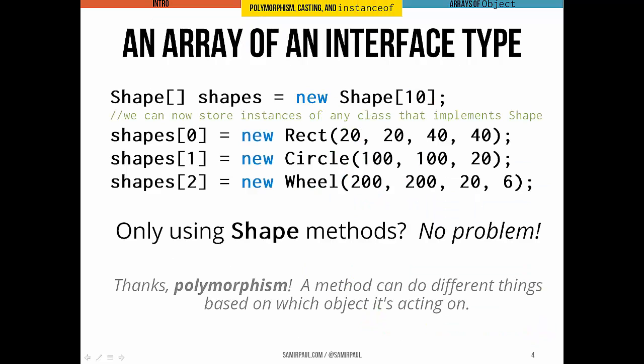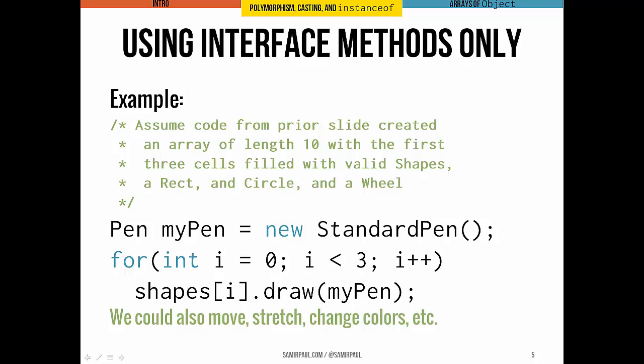Pretty common to declare and instantiate an array of some interface type, like the shape interface that we saw before. As an example, this code makes an array of 10 cells and it's going to hold shapes in it. In this array, we can store instances of any class that implements shape - rect or circle or wheel or any other class that we decided should implement the shape interface. Now as long as we send shape messages to the elements of the array, there's really no problem. We can sort of ignore the fact that all the objects are of different concrete classes. In fact, this is polymorphism at work. As an example, we can see here, let's draw all the shapes that are in the array. If you remember, draw is a shape interface method. So we can go through this array called shapes and just call draw on every single one using a pen instance. We could also move all the shapes or stretch them or change their colors or anything else that is in the shape interface. No problem.